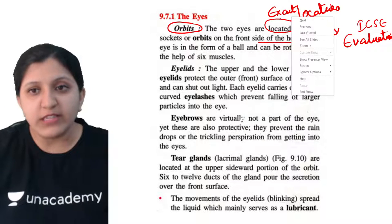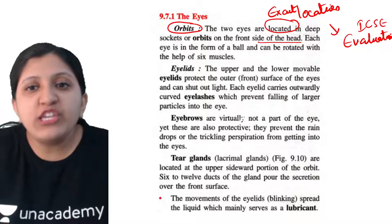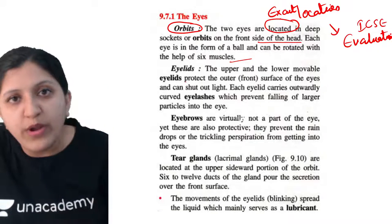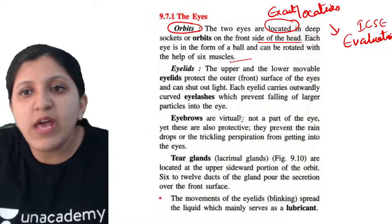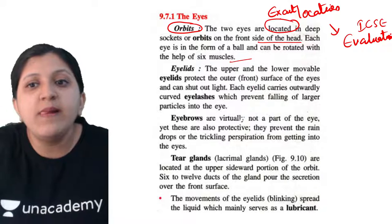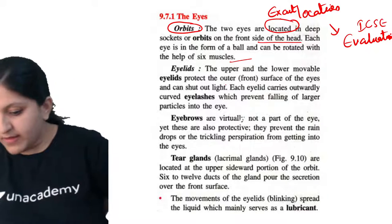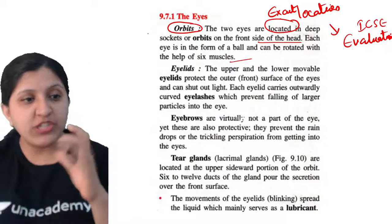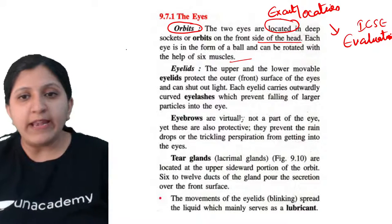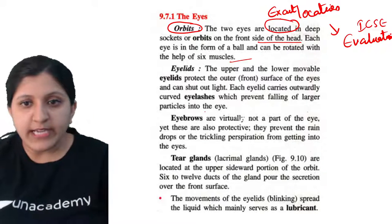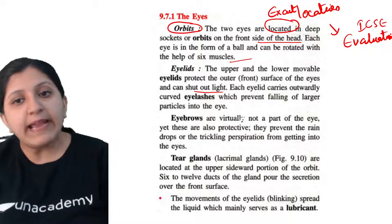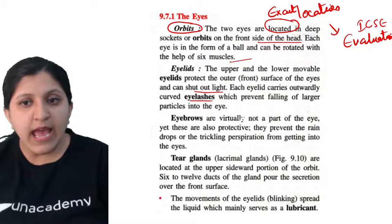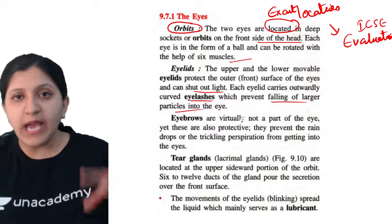Each eye is in the form of a ball and can be rotated with the help of six muscles which hold onto the eyeball. There are upper and lower movable eyelids that protect the front surface of the eye. The eyelids can be used to shut out light. The eyelid also carries outwardly curved eyelashes which prevent larger particles from falling into the eye.